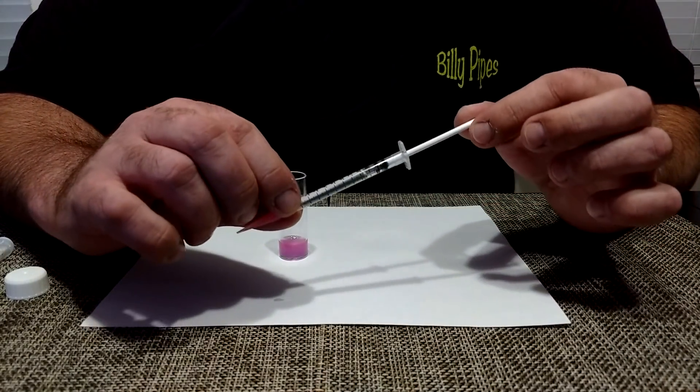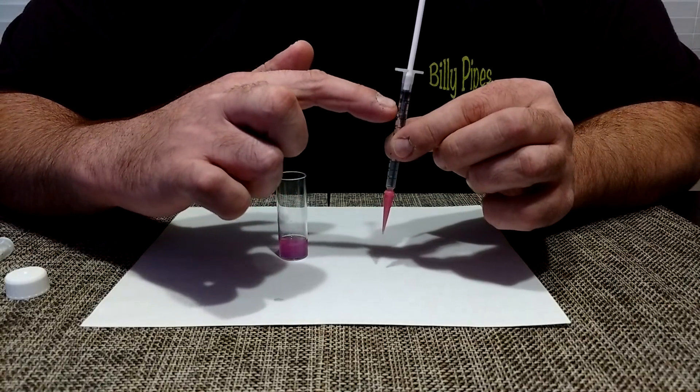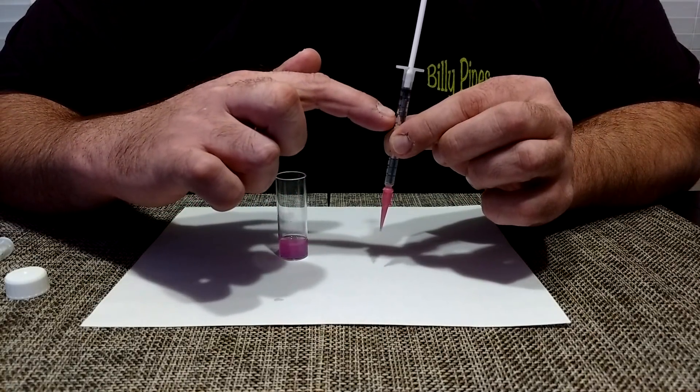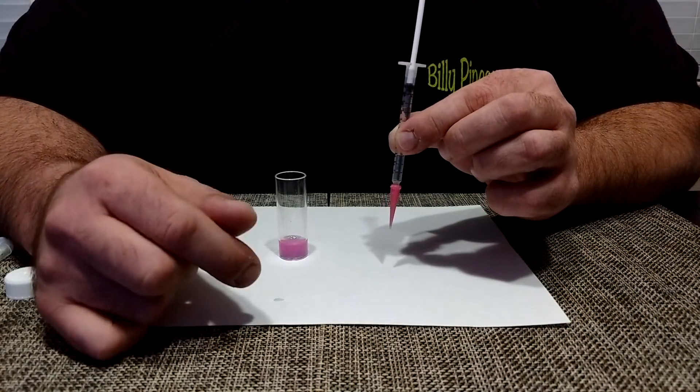And I already pre-filled this. I'll show you the correct way to do it. You want to go with the reading where the plunger is, not where the titration fluid is. So you draw in one milliliter of the titration fluid.